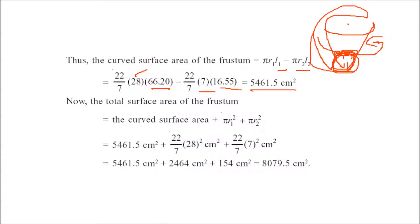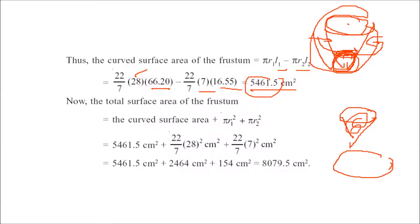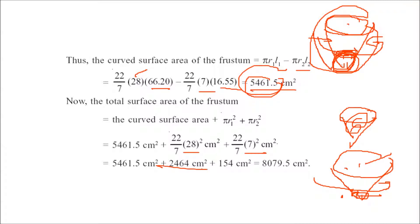Now, to find the total surface area of the frustum, we add both circular ends to the curved surface area. The frustum has two circular faces: π r1² and π r2². So we add π × 28² and π × 7² to the curved surface area, giving the total surface area of the frustum as 8079.5 square centimeters.